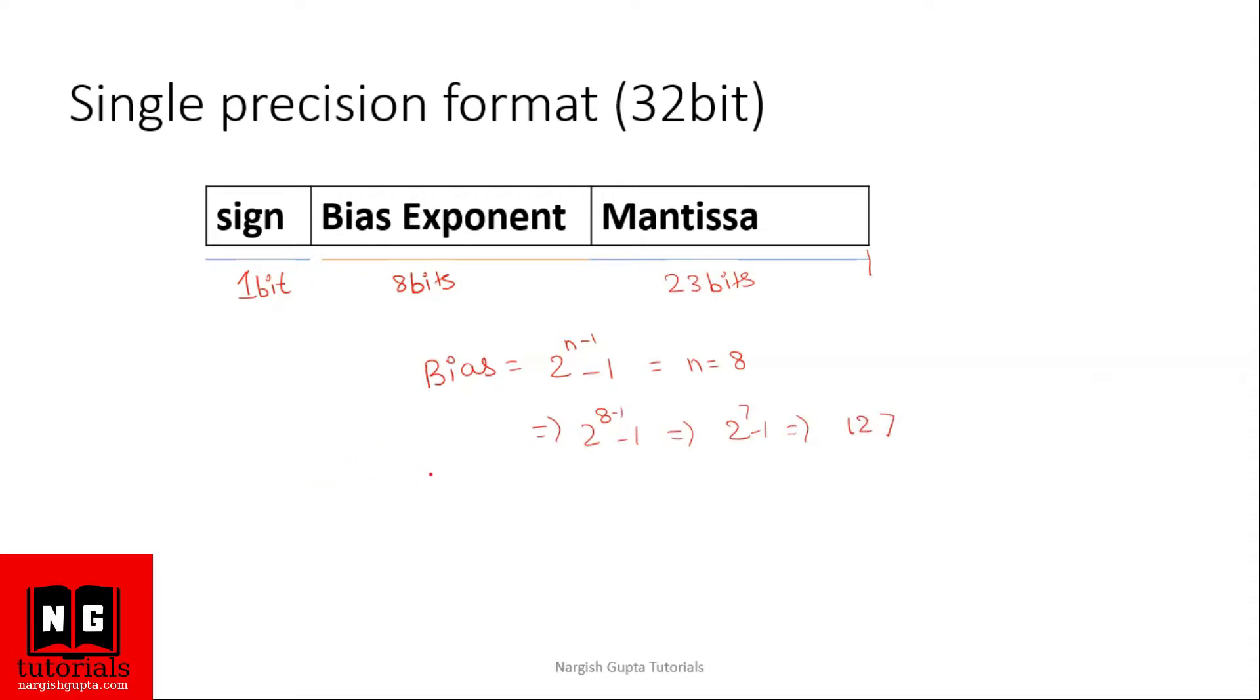We can also find out the range of the bias value, and the formula of which will be minus 2 to the power n minus 1 to 2 to the power n minus 1 minus 1. In this case, this will be minus 2 to the power 7 to plus 2 to the power 7 minus 1, that is from minus 128 to plus 127.